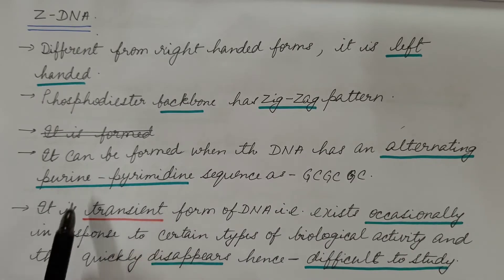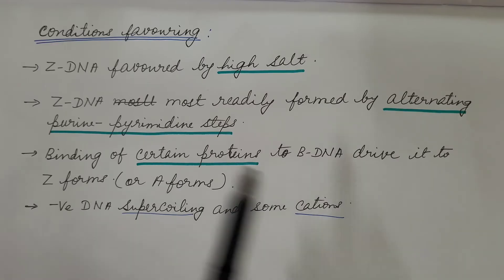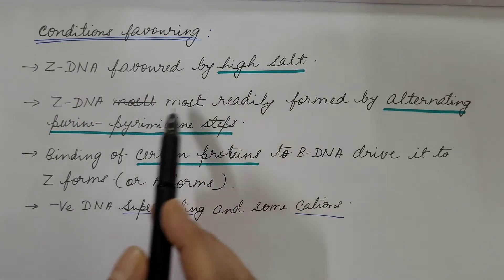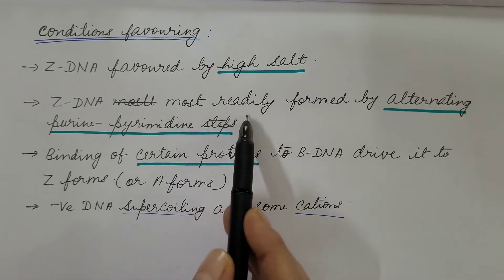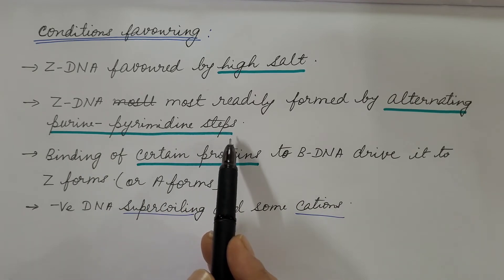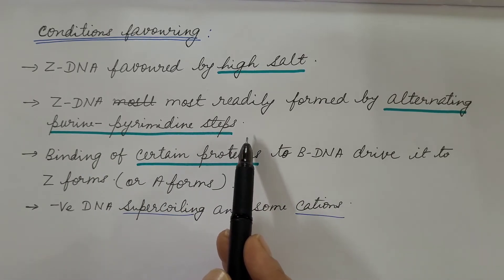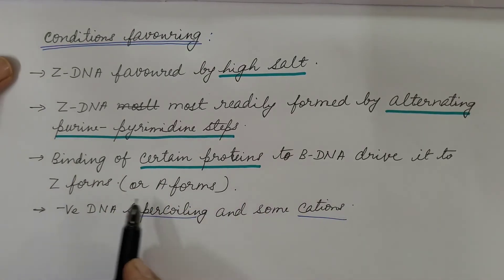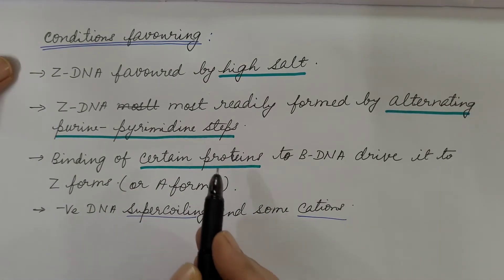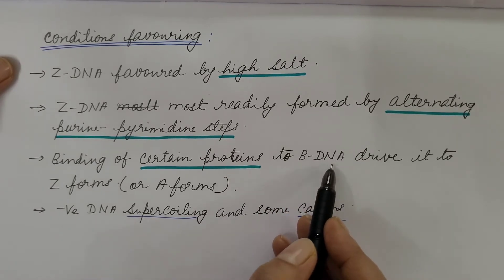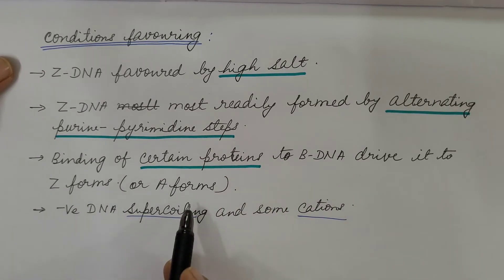Z-DNA is not permanent but transient. Conditions that favour Z-DNA include high salt concentration; it is most readily formed by alternating purine-pyrimidine steps such as GC-GC repeat units. Binding of certain proteins to B-DNA can also drive it to Z-form or A-form, so when certain proteins bind to B-DNA, the conformation shifts to either Z-form or A-form.